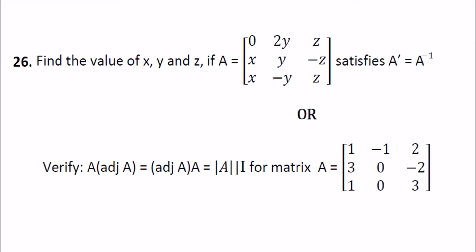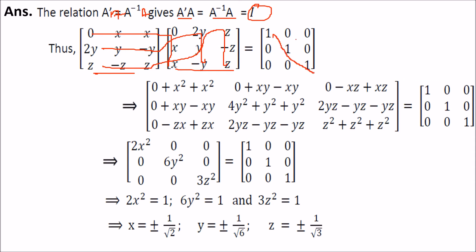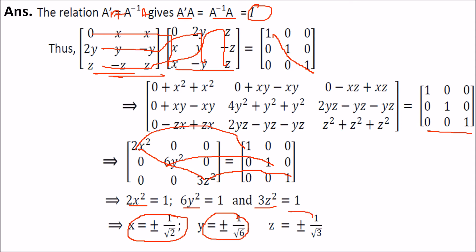We find the values of x, y, z in matrix A if A transpose equals A inverse. This means A transpose times A equals I. Taking the transpose and multiplying gives diagonal entries 2x², 6y², and 3z². Setting each equal to 1: x equals plus or minus 1 by root 2, y equals plus or minus 1 by root 6, and z equals plus or minus 1 by root 3.